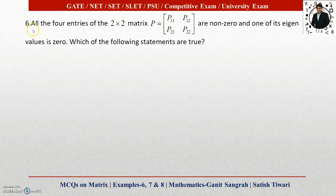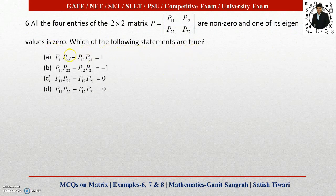Example number 6: All four entries of the 2×2 matrix P are non-zero and one of its eigenvalues is 0. Which of the following statements are true? If we have these four conditions, you have to apply the property of eigenvalue. So what is that?